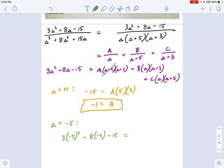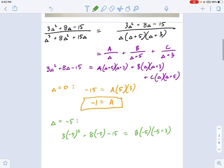And that's going to equal to, well, this one cancels out, so there's no A's. This one cancels out, there's no C's. All you get left is the B. B times negative 5 times negative 5 plus 3.